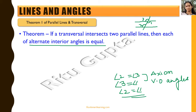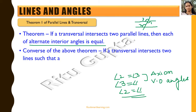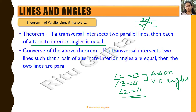So this is what the theorem says: the alternate interior angles when a transversal intersects two parallel lines will always be equal. Now the converse of the above theorem is also true, which says that if a transversal intersects two lines such that the pair of alternate interior angles are equal, then the two lines have to be parallel.